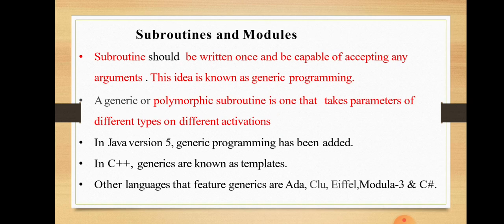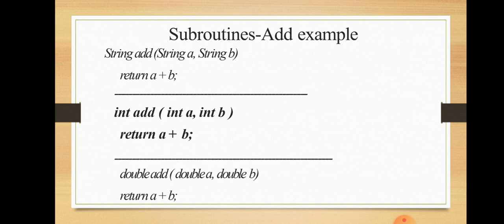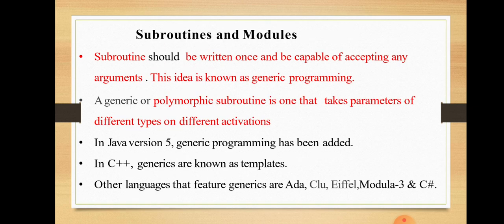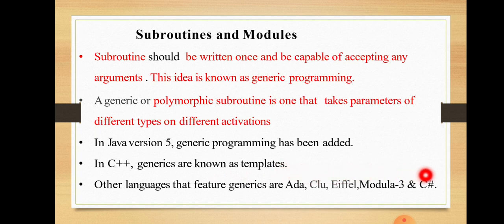Subroutines should be written once and be capable of accepting any arguments — this idea is known as generic programming. A generic or polymorphic subroutine is one that takes parameters of different types on different activations. In C++, generics are known as templates. Other languages that support generics include Ada, Eiffel, Modula, and C Sharp.